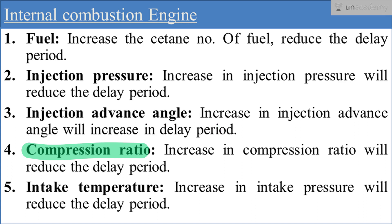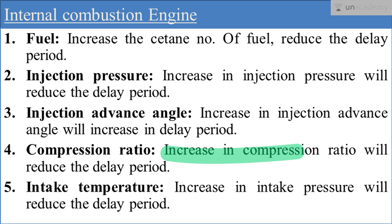Next is compression ratio. Increasing the compression ratio will reduce the delay period. This is well known — increase in compression ratio increases efficiency, and the efficiency increases only because the delay period is reducing. When temperature and density both increase due to higher compression ratio, the efficiency increases, the delay period drops, and the self ignition temperature will also drop.